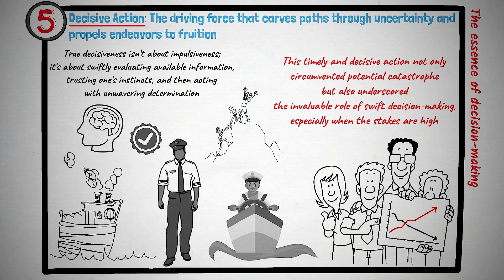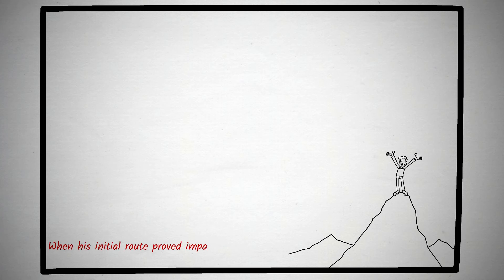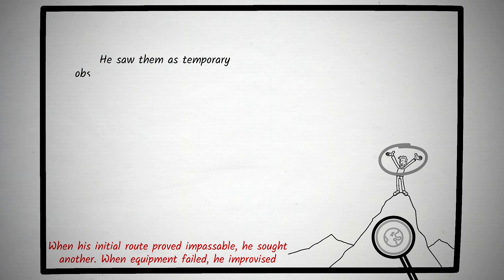Navigating deeper into this reservoir of wisdom, the sixth principle takes form through the life of a tenacious mountaineer. While scaling one of the world's most formidable peaks, this climber encountered avalanches, treacherous terrains, and unpredictable weather. Yet each setback was met not with resignation, but with an undying spirit of perseverance. When his initial route proved impassable, he sought another. When equipment failed, he improvised. The mountain tested him not only physically but mentally and emotionally, pushing him to the brink of his endurance. Yet what separated this mountaineer from many before him was his relentless persistence. Instead of viewing challenges as insurmountable barriers, he saw them as temporary obstacles on the path to the summit.